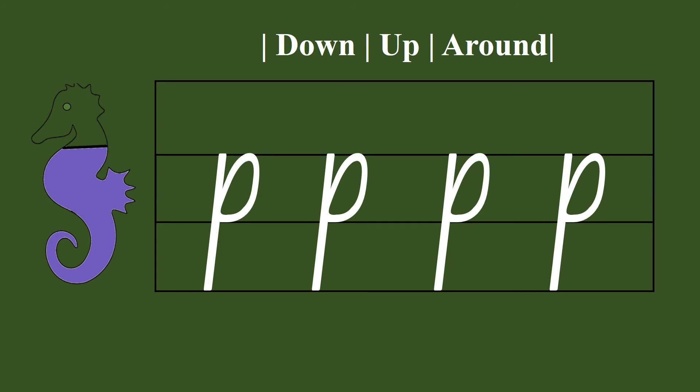Now let's see the position of the letter P. As P letter goes down in the tail, so it's a tail letter. It starts from the body and ends in the tail. We will only color the body and the tail of the seahorse.